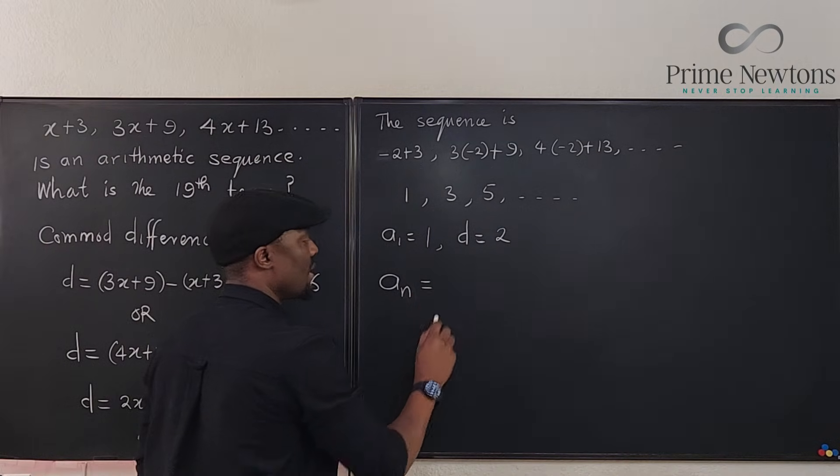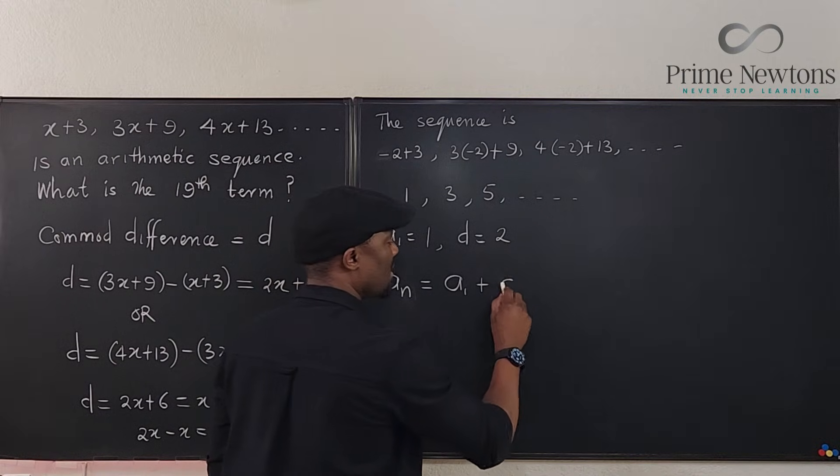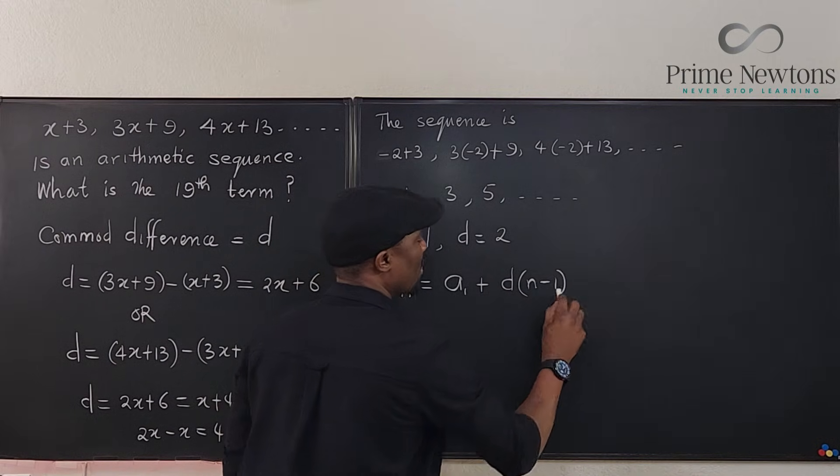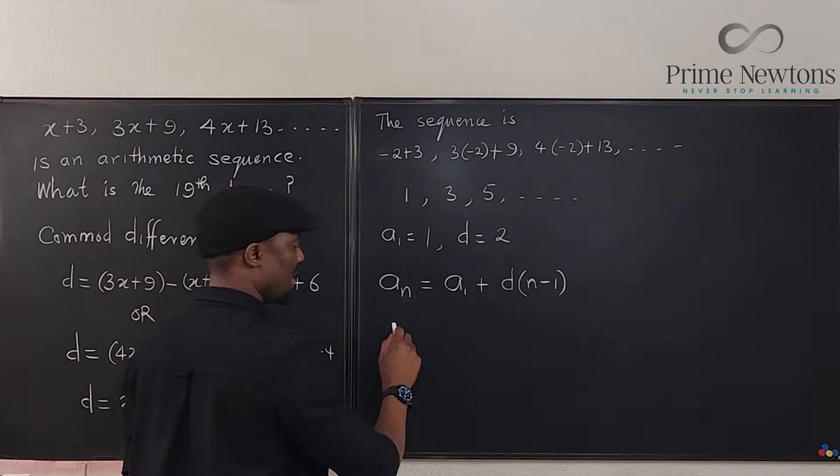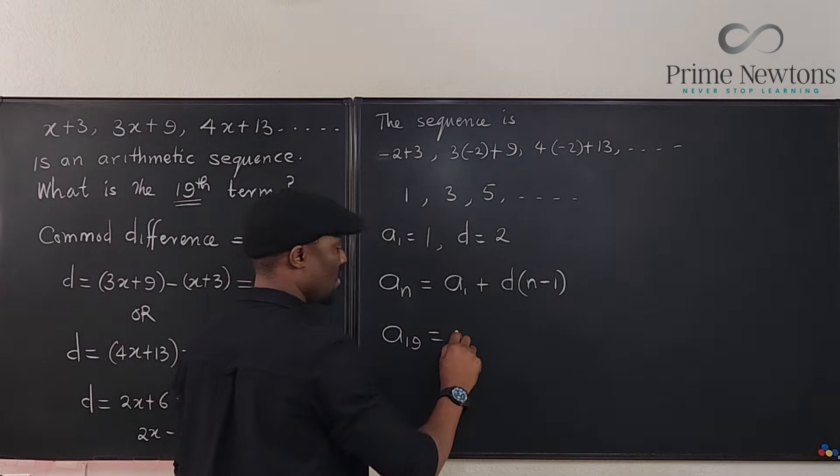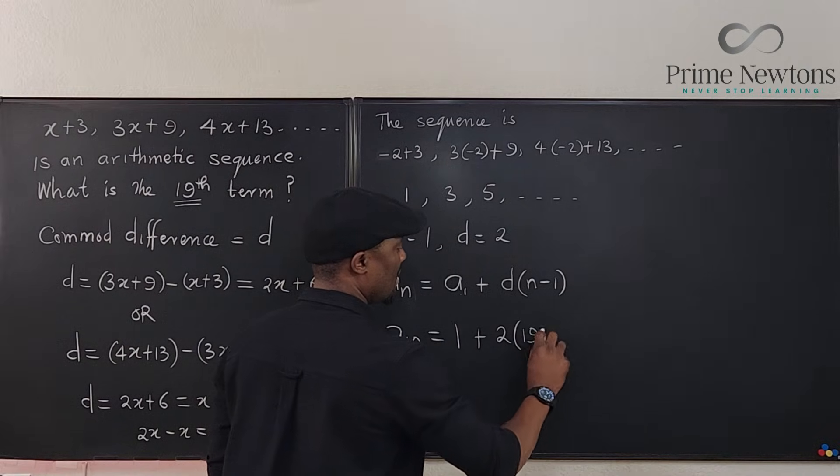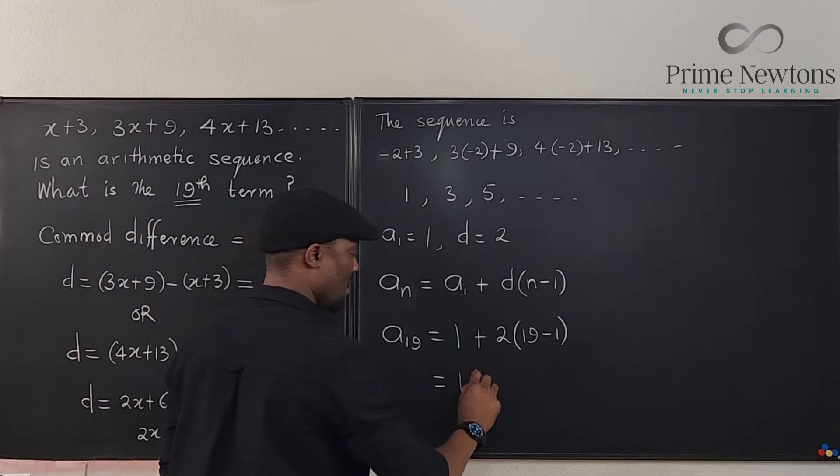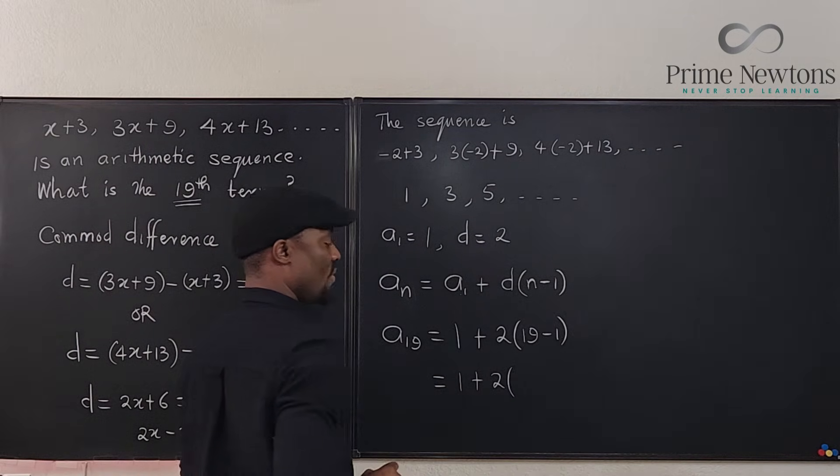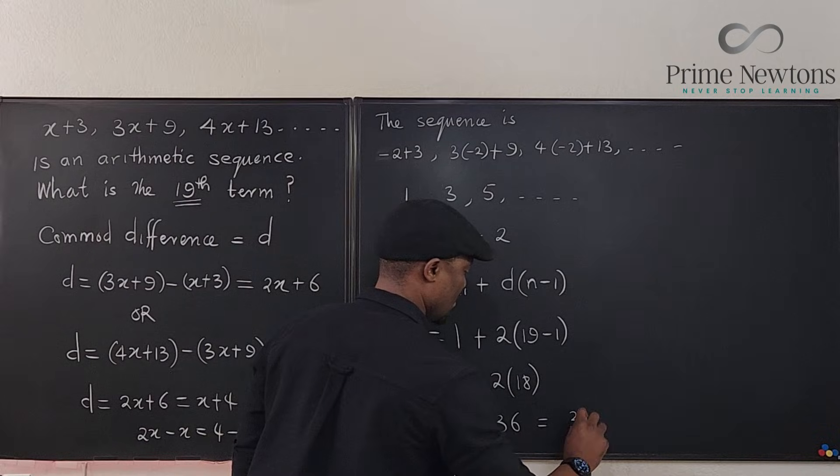A sub n equals a sub 1, the first term, plus the common difference multiplied by n minus 1. So plugging in the numbers, what do you get? You get a sub 19 for the 19th term, which is what we're looking for, will be equal to a sub 1 which is 1 plus d which is 2 times 19 minus 1. Our answer is 1 plus 2 times 18. This is equal to 1 plus 36 which is equal to 37.